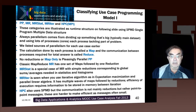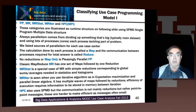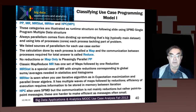Iterative MapReduce is an important concept. When you do expectation maximization and parallel linear algebra, you always have multiple waves of maps followed by reductions. You're iterating, so you have MapReduce, MapReduce, MapReduce — and you need to save the data in memory between the different stages.